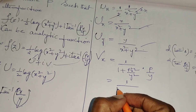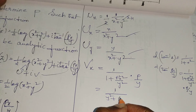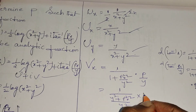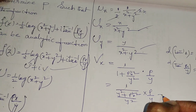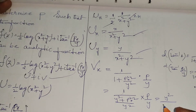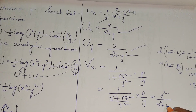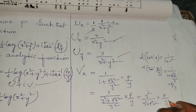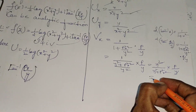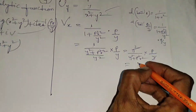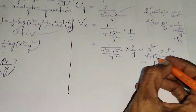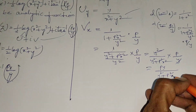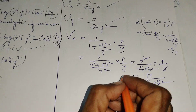Simplifying vx: we have (y²/(y² + P²x²)) · (P/y). The y in the denominator cancels with one y in the numerator, leaving vx = Py/(y² + P²x²).